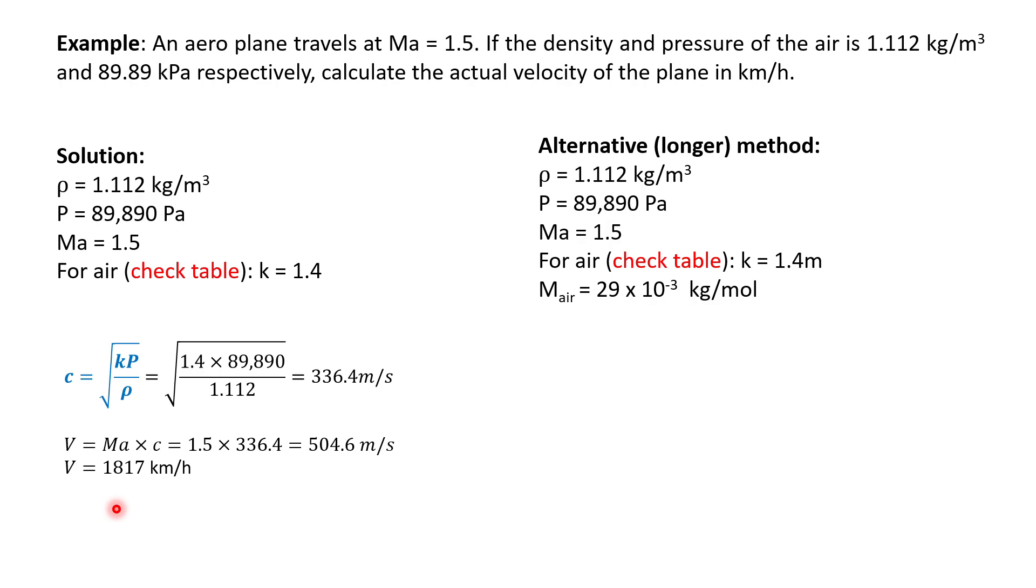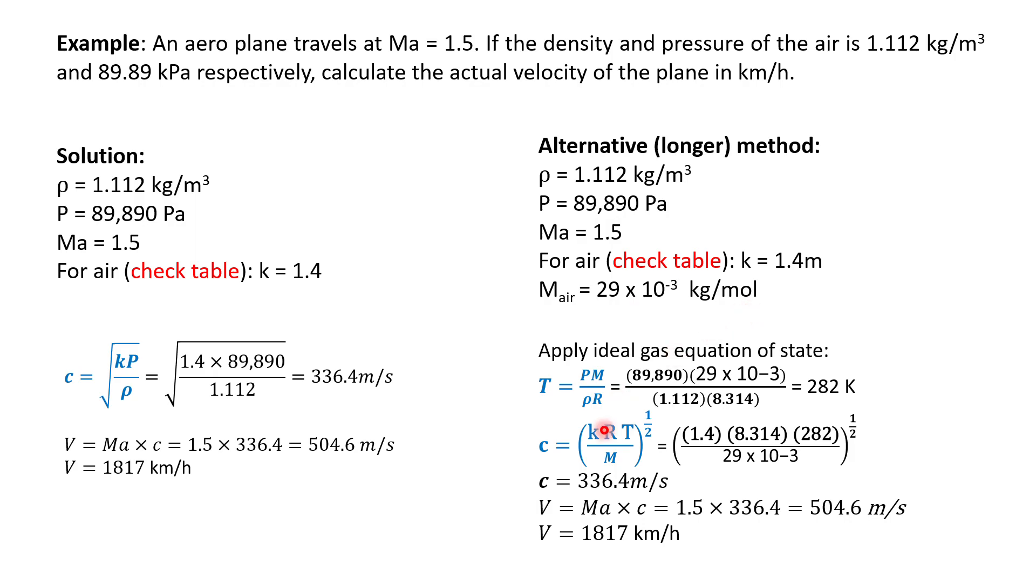You can use the other equation. In this example, I will show you that both equations are applicable. If you can calculate it with one, you can actually calculate it with another one. Here we have the density value, the pressure, the Mach number, and we can get k value from the table. We know that the average molar mass of the air is 29 grams per mole. To be able to use the other equation for C, you need the temperature. Based on this information, you can find out using the ideal gas state equation. We find out that the temperature at this condition is 282 Kelvin, and we use this value in this equation to find out the same final answer.